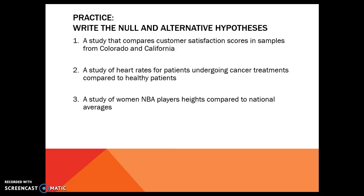Stop for a second and practice: what would be the null and what would be the alternative hypotheses for these three studies? For study number one, the null would be that Colorado and California are the same — there is no difference between Colorado and California. The alternative hypothesis would be that there is a difference between Colorado and California. It is that simple, and we would write that in words.